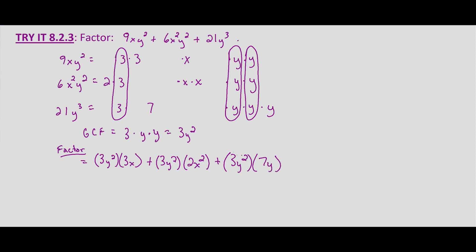So now we can, that shows we can factor out from all three terms, 3y². And then that would be times 3x plus 2x² plus 7y.